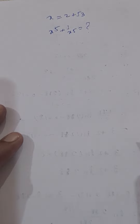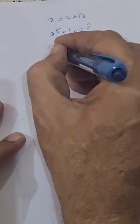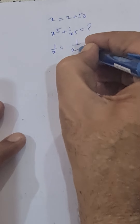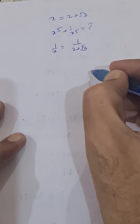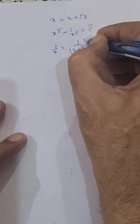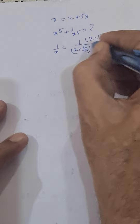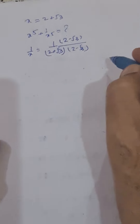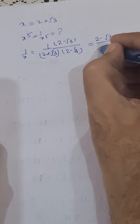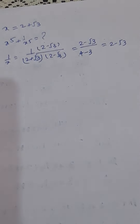Our approach will be to find out first x plus 1 upon x. x is 2 plus root 3, so 1 upon x will be equal to 1 divided by 2 plus root 3. We rationalize it by multiplying the denominator and numerator by 2 minus root 3. This becomes 2 minus root 3 over 4 minus 3, so this becomes 2 minus root 3.